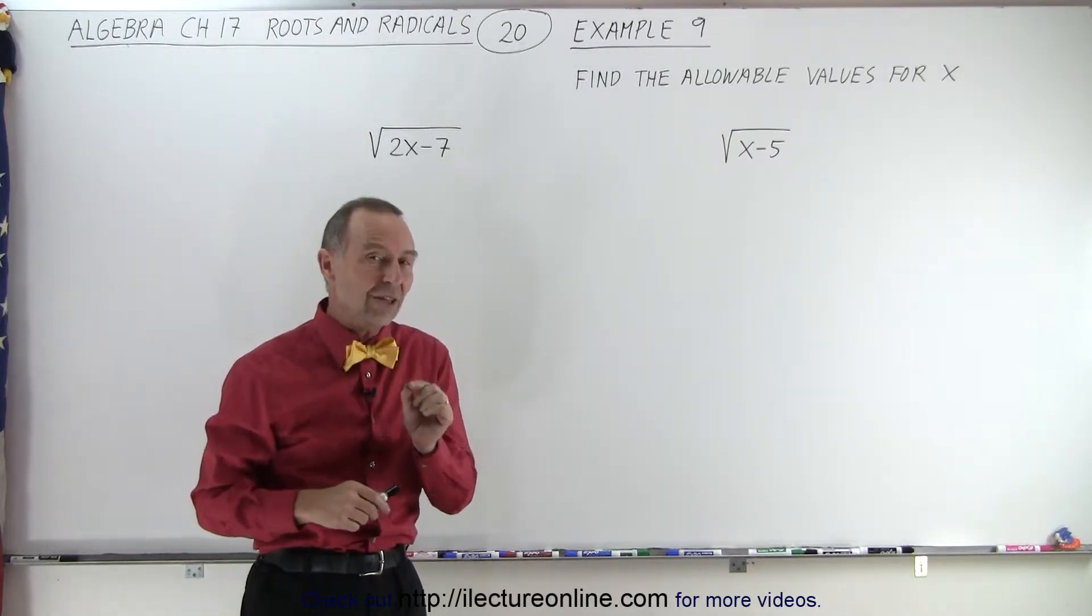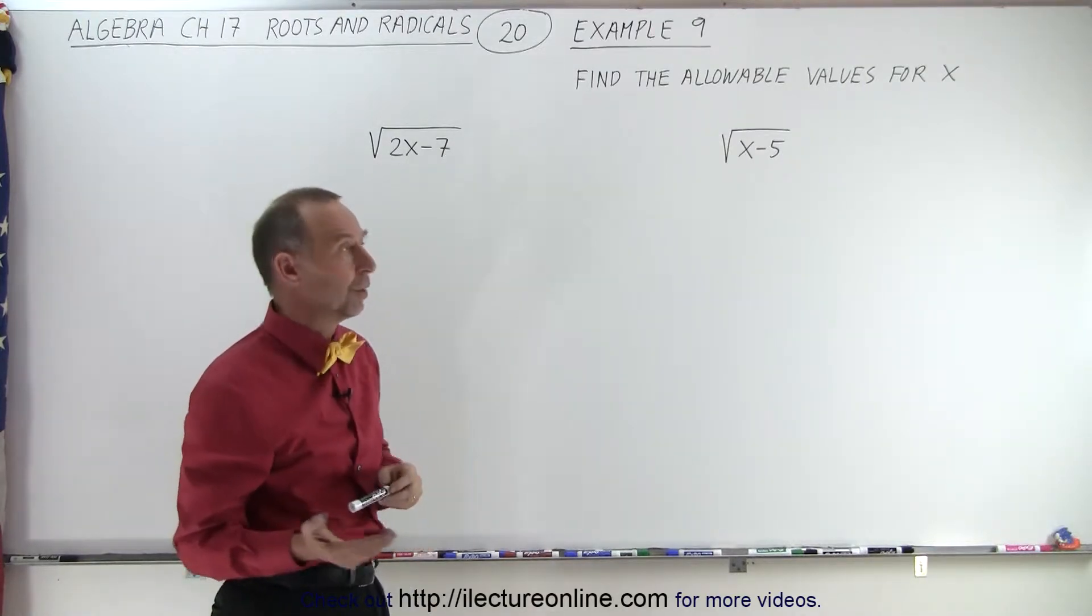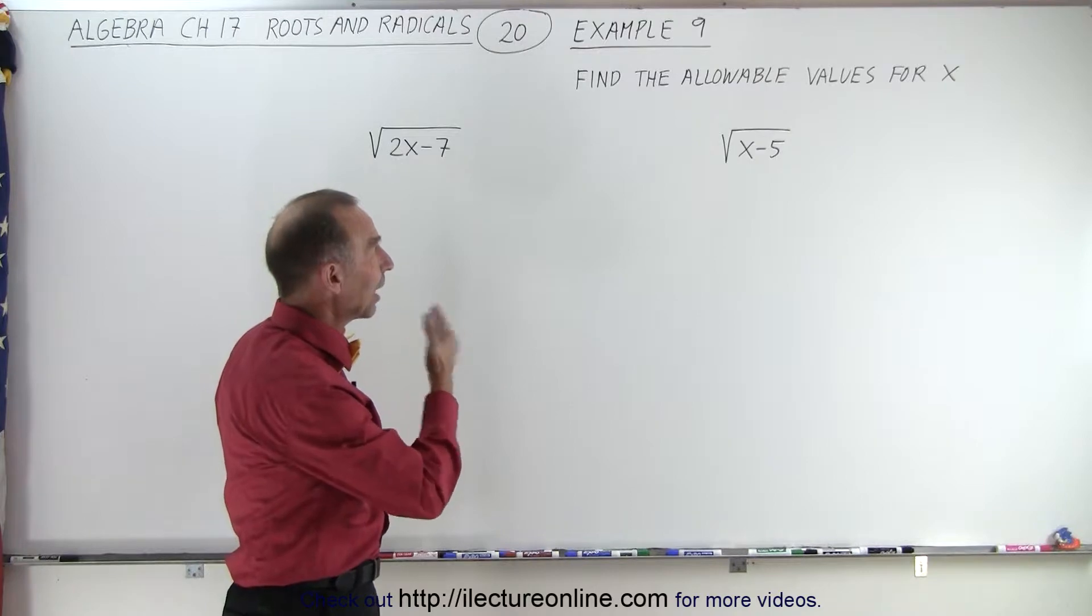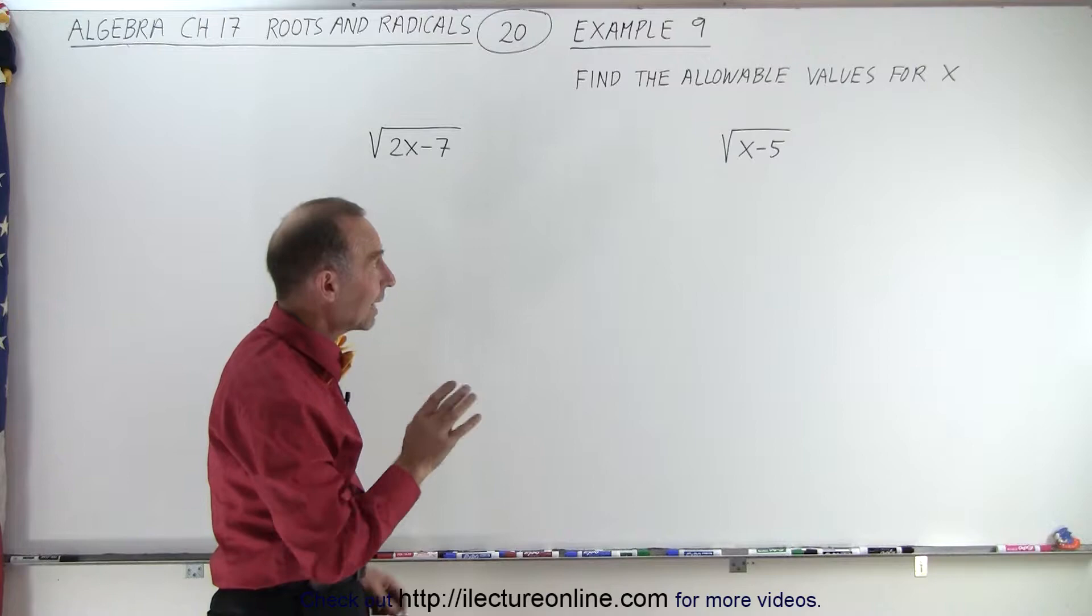there are certain values that the variable cannot be. Otherwise, we'll have a negative inside the radical. So if they tell us find allowable values for x, we want to make sure that the radical, what's inside the radical, cannot be negative.